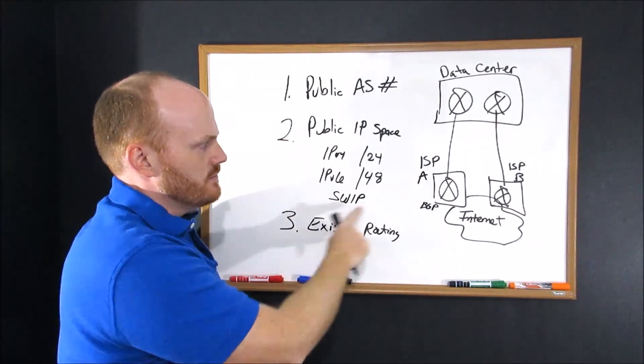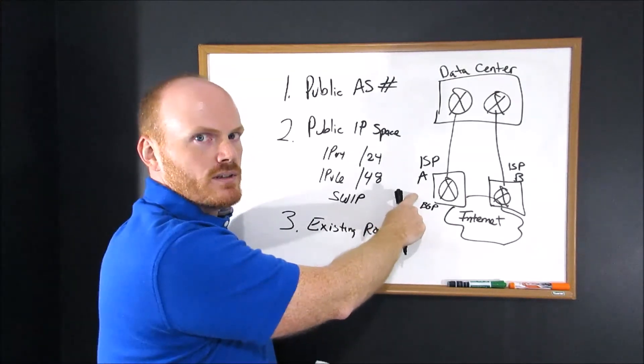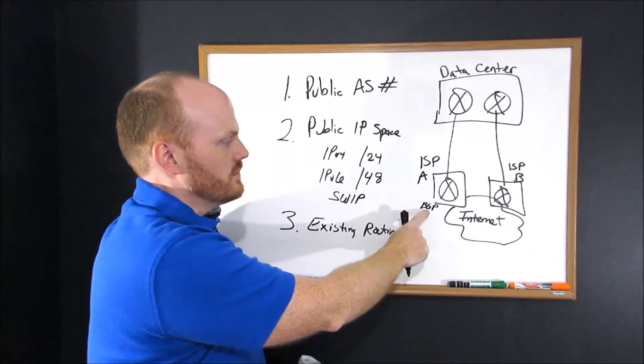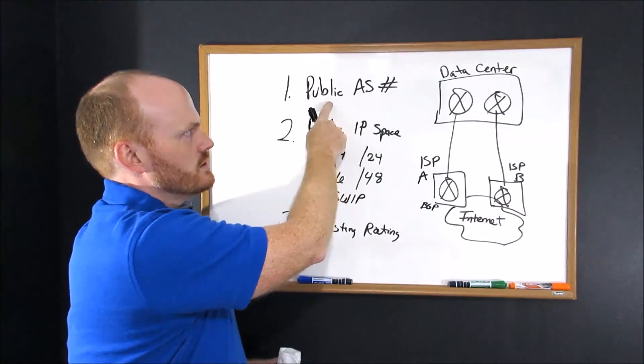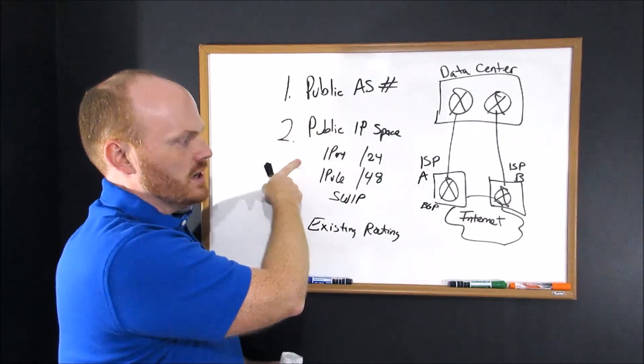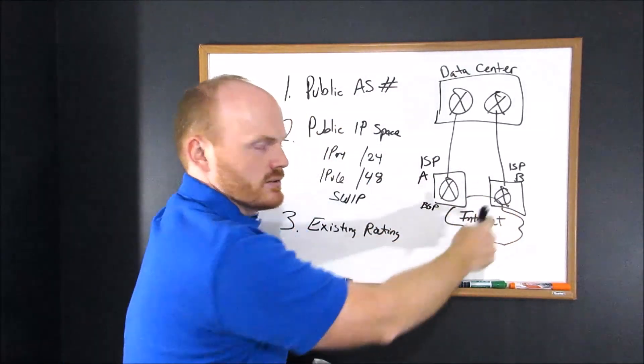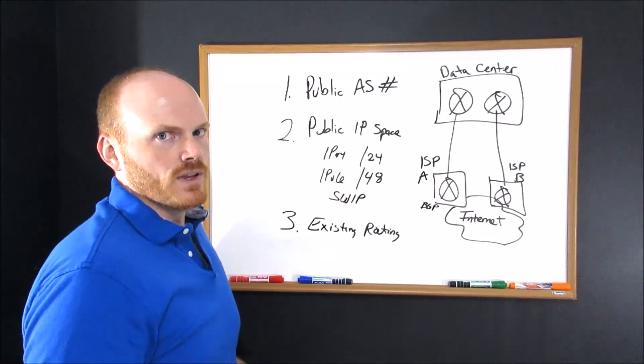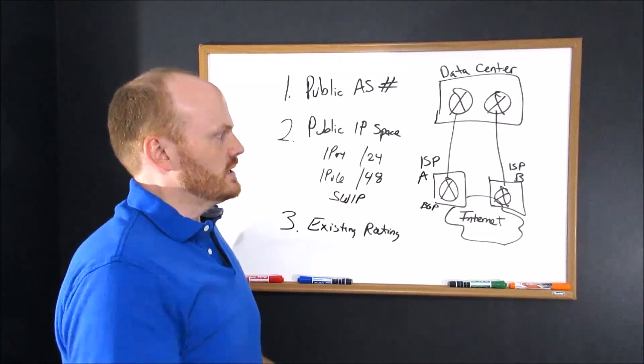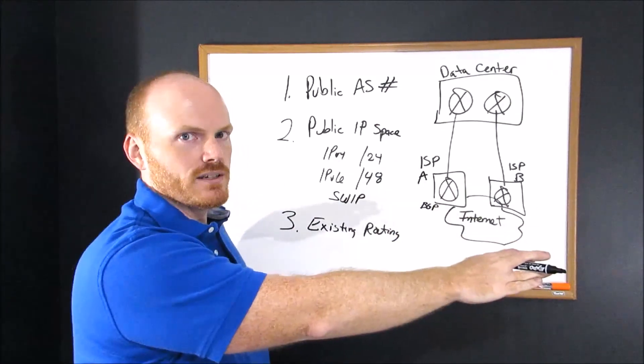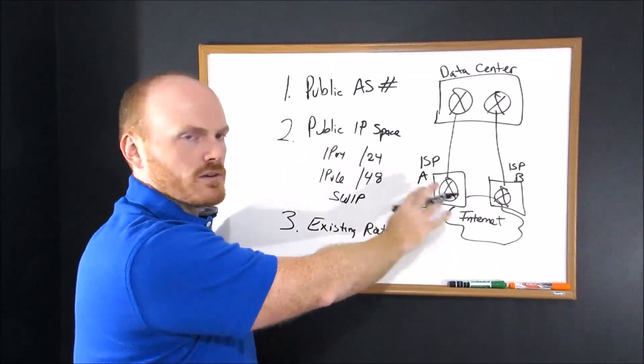Step 3, make sure the first ISP connection is configured with BGP with your new AS and your new IPs before placing the order with the second ISP. That will make things go a lot smoother. You can just keep adding ISP connections in the future and keep giving them the same info.